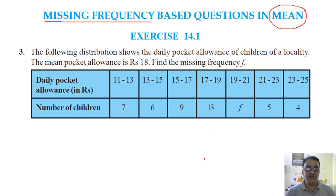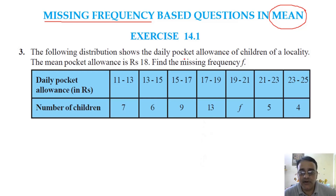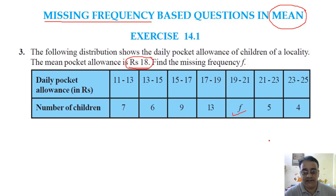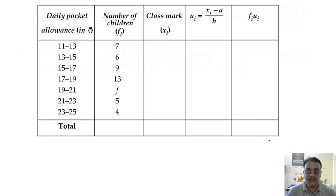This is question number 3. The following distribution shows the daily pocket allowance of children of a locality. The mean pocket allowance is rupees 18. So here mean is given 18. Find the missing frequency f — this frequency we need to find.